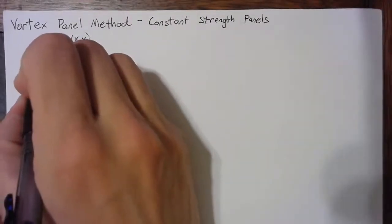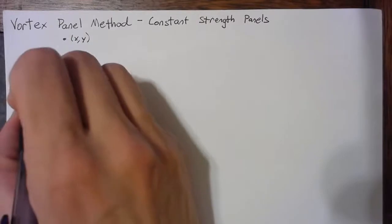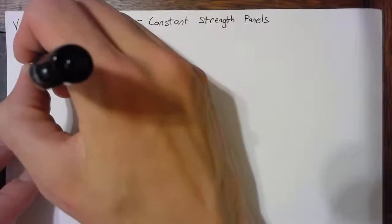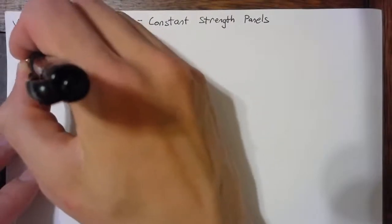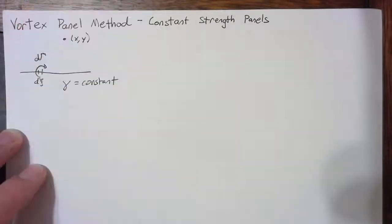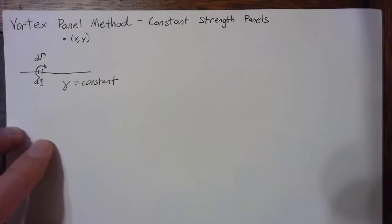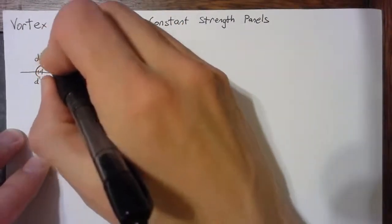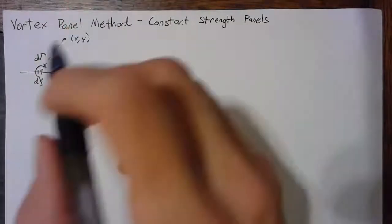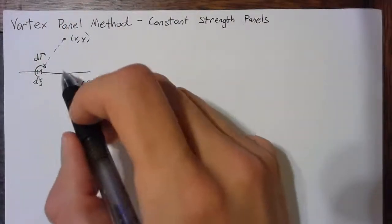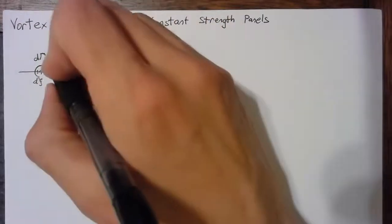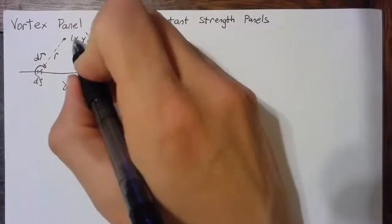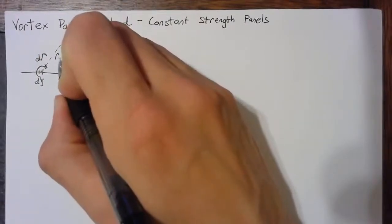Each segment of this panel, which we're going to call d xi, is going to have some differential circulation that we'll call d gamma, and it will act on this point xy just like a point vortex would. We're going to call this distance between our segment and our point an r xi.